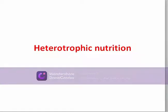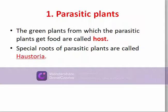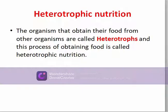We are going to start heterotrophic nutrition. Although most plants have chlorophyll and can manufacture their own food, there are some plants which do not have chlorophyll — like humans and other animals, such plants depend on food prepared by other green plants. Organisms that obtain their food from other organisms are called heterotrophs, and the process of obtaining food is called heterotrophic nutrition.